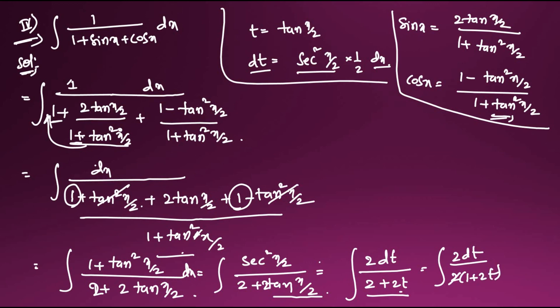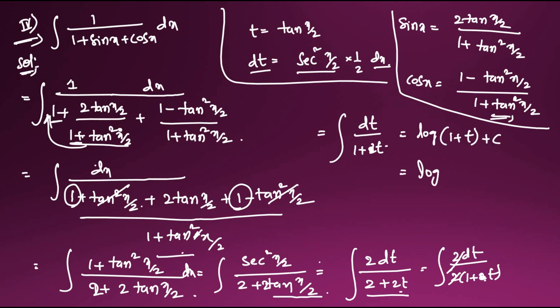Integral of dt/(1 + t) = log|1 + t| + C. Substituting back t = tan(x/2): the answer is log|1 + tan(x/2)| + C. This is the answer to the fourth question.